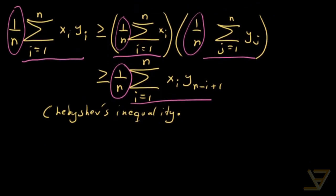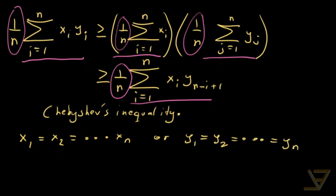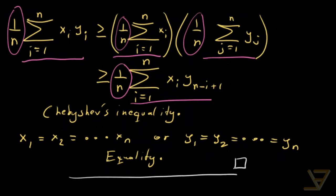The last thing I want to mention is possible equality cases. One possible equality case is x1 = x2 = ... = xn, or y1 = y2 = ... = yn, and both of these cases or their combination gives equality. But it's not biconditional — there are other equality cases, and there is no known way of characterizing all equality cases to the best of my knowledge. So that's Chebyshev's inequality. Thank you for watching, and I'll see you next time.